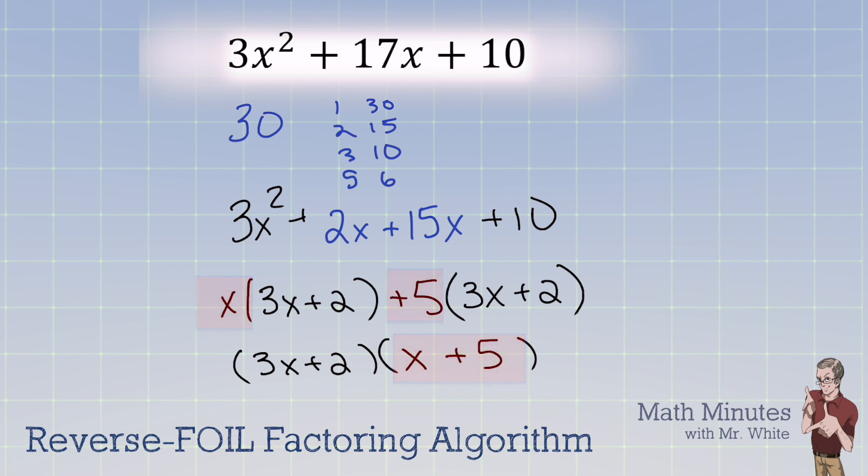We have just reverse foiled the trinomial that was given 3x squared plus 17x plus 10. And we used an algorithm. There was no guessing and checking.